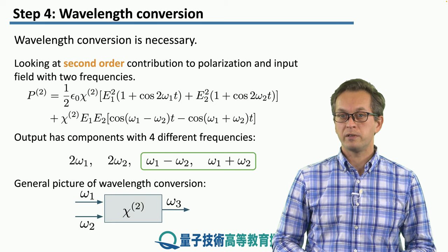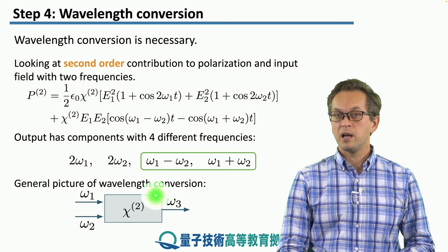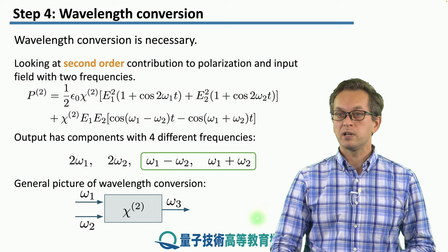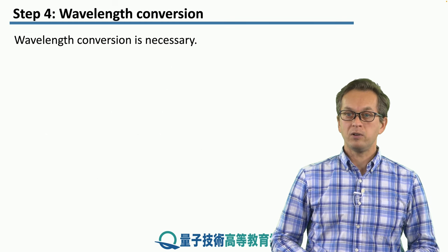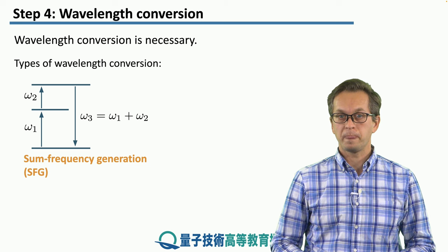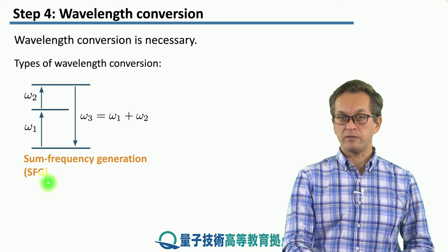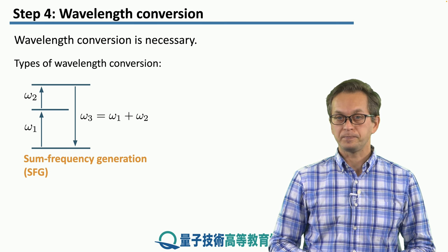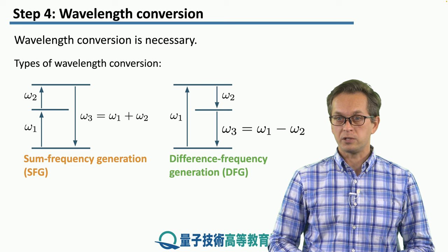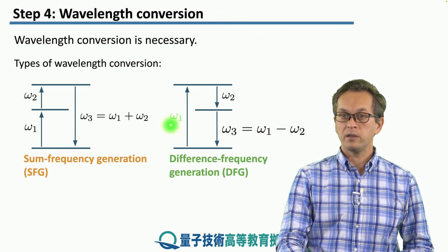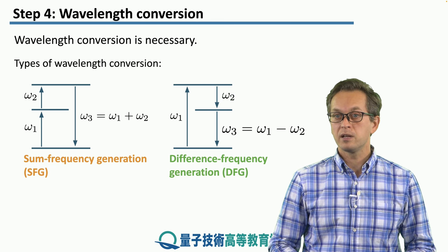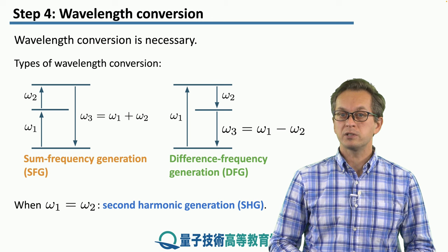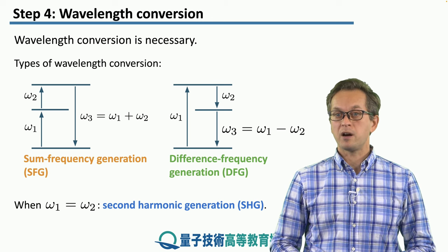The general picture of wavelength conversion is the following: we have some piece of dielectric material — usually called a chi2 crystal — with two input fields at frequencies omega1 and omega2, and an output field at the new frequency omega3. The types of wavelength conversion mostly used are: sum frequency generation (SFG), where omega1 and omega2 add up to produce omega3; difference frequency generation (DFG), where omega3 equals the difference between omega1 and omega2; and second harmonic generation (SHG), a particular type of SFG where omega1 and omega2 are the same.